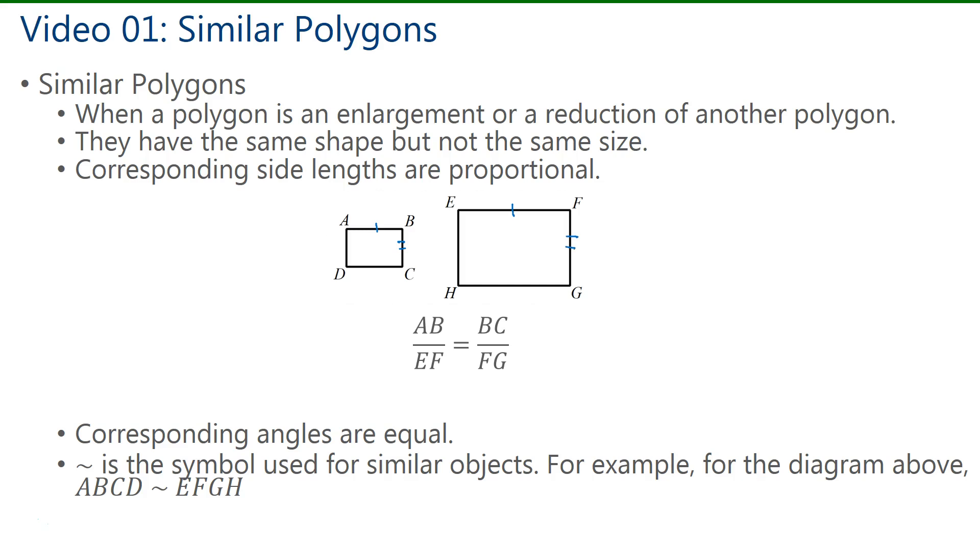So the corresponding side lengths are not going to be equal, but the corresponding angles are equal. In this rectangle, all angles measure 90 degrees, and in the similar polygon, they measure 90 as well. So when we have an enlargement or a reduction of another polygon, the angle measurements stay the same.